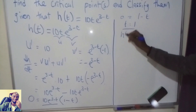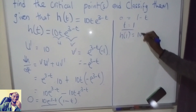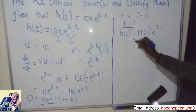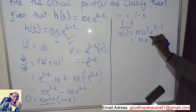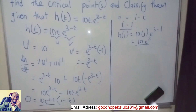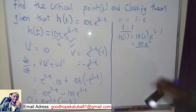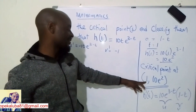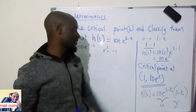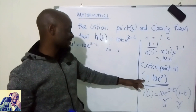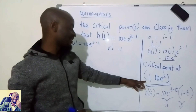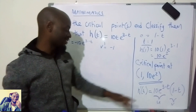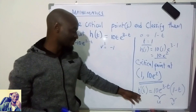Now we substitute t=1 into the original function to find h. So h(1) equals 10 multiplied by 1, then e^(3-1), which gives 10e². Therefore the critical point is at (1, 10e²). To test whether this is a maximum, minimum, or saddle point, we need to find the second derivative.